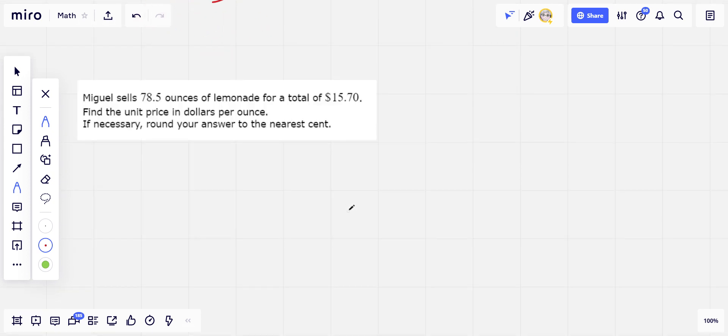Let's try one more. This says Miguel sells 78.5 ounces of lemonade for a total of $15.70. Find the unit price in dollars per ounce. So how much is Miguel making per ounce of lemonade that he's selling? So we're going to divide $15.70 by 78.5.